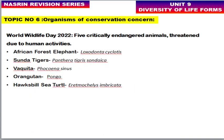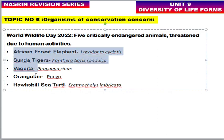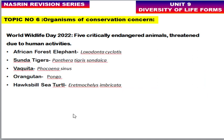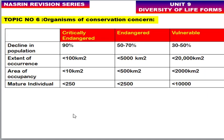On World Wildlife Day 2022, five critically endangered animals threatened by human activities were identified: African forest elephant, Sunda tiger, Bornean orangutan, hawksbill sea turtle, and others. Soon these animals may become extinct. Critically endangered, endangered, and vulnerable categories all fall under threatened species.